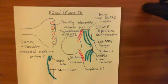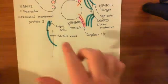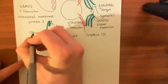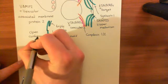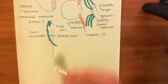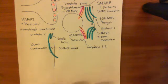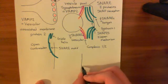Why is this important? Syntaxin 1 can exist in two conformations. It can exist in the open conformation — which is the conformation it needs to be in to form the core SNARE complexes. So in order to interact with the other SNARE proteins, SNAP25 and synaptobrevin/VAMP2, it needs to be in this open conformation. However, it can also adopt another conformation, cunningly called the closed conformation.